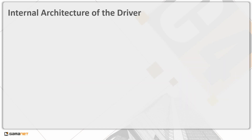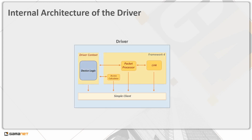From a functional perspective, the internal architecture of the driver consists of several logical components. Framework 4 is an SDK provided by GammaNet for developers of drivers. It includes a sub-module Link, which provides the communication channel with the device; Packet Processor, which enables physical communication of packets, sending data and processing responses; and a sub-module called Access Calculator, which helps developers manage access right settings in devices managing credentials. Each of these parts will be described in more detail in a separate lesson.